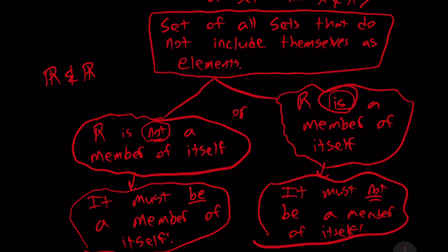Alternatively, if we assume that R is not a member of itself, we are led to the conclusion that it is a member of itself. So in either case, in either assumption, either it is or it is not, we are led to a contradiction of that assumption.